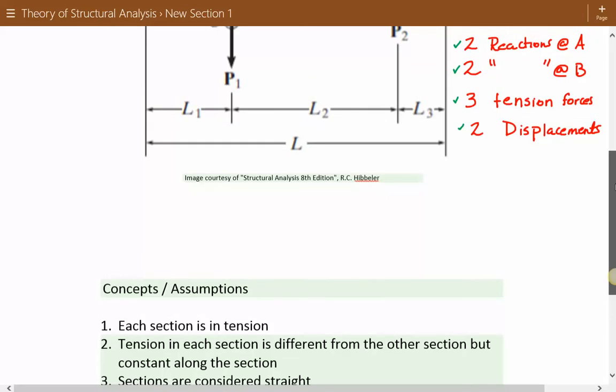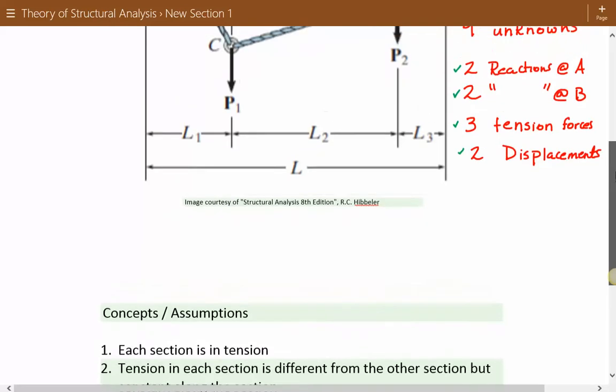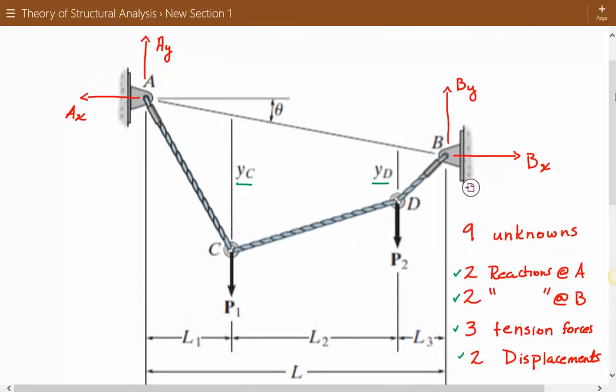The tension in each section is different from the other section, but constant along the section. So the tension in AC is different from CD and is different from DB, but the tension along AC is constant, along CD is constant, and along DB it's constant.